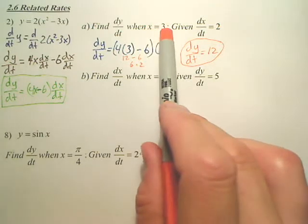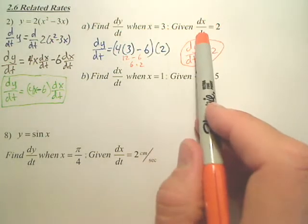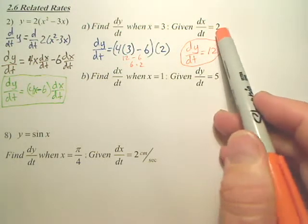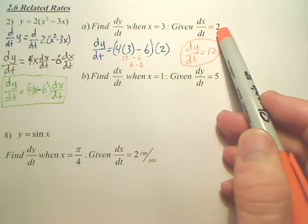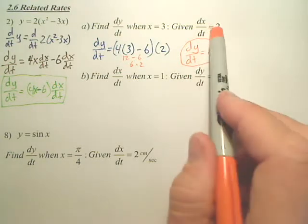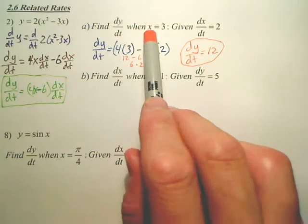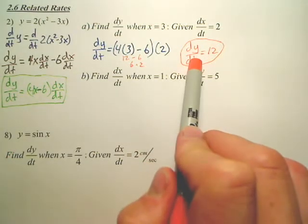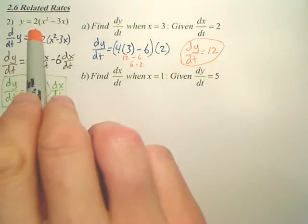For this equation, y is changing at a rate of 12 units per whatever time you're dealing with. When x is 3, if x is changing at 2 units per whatever time. So if we're given this change of x and given this x value, this is the change of y, given this equation to begin with.